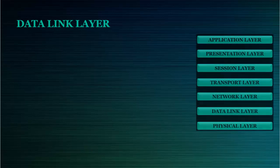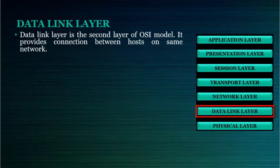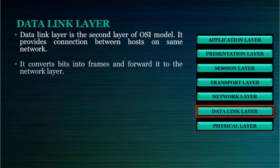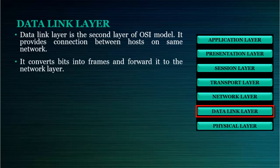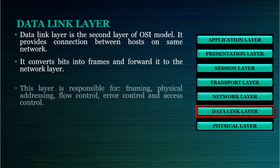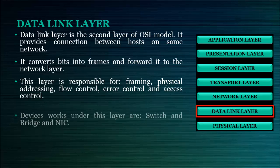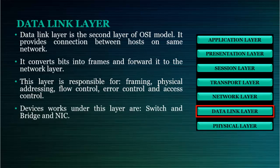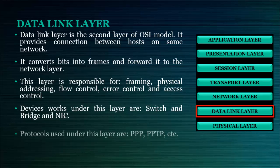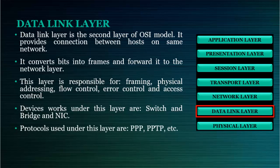Data link layer is the second layer of OSI Model. It provides connection between hosts on the same network. It converts bits into frames and forwards it to the network layer. This layer is responsible for framing, physical addressing, flow control, error control, and access control. Devices that work under this layer are switch, bridge, and NIC (network interface card). Protocols used under this layer are Point-to-Point Protocol, Point-to-Point Tunneling Protocol, etc. The datagram at the data link layer is called frames.